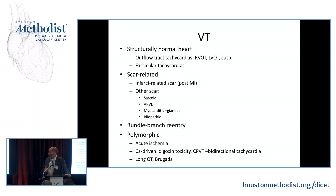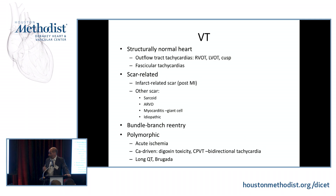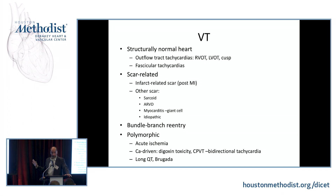In bundle branch reentry, electricity re-enters from the right bundle to the left bundle. It is typically very fast, typically associated with syncope, not associated with scar, and monomorphic. It typically has a completely typical left bundle branch block morphology, but may also have a right bundle branch block morphology depending on the direction of reentry. Treatment is simple — we ablate the right bundle and it's taken care of.